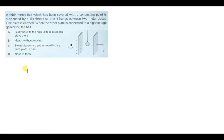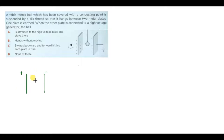In this particular question, we have given two capacitor plates — a positively charged plate and a negatively charged plate. One particular ball is kept in between these two plates. This ball is covered with conducting paint, so charges are present on its surface. Initially, this ball is neutral. A high voltage generator is connected, so this is a highly positively charged plate.